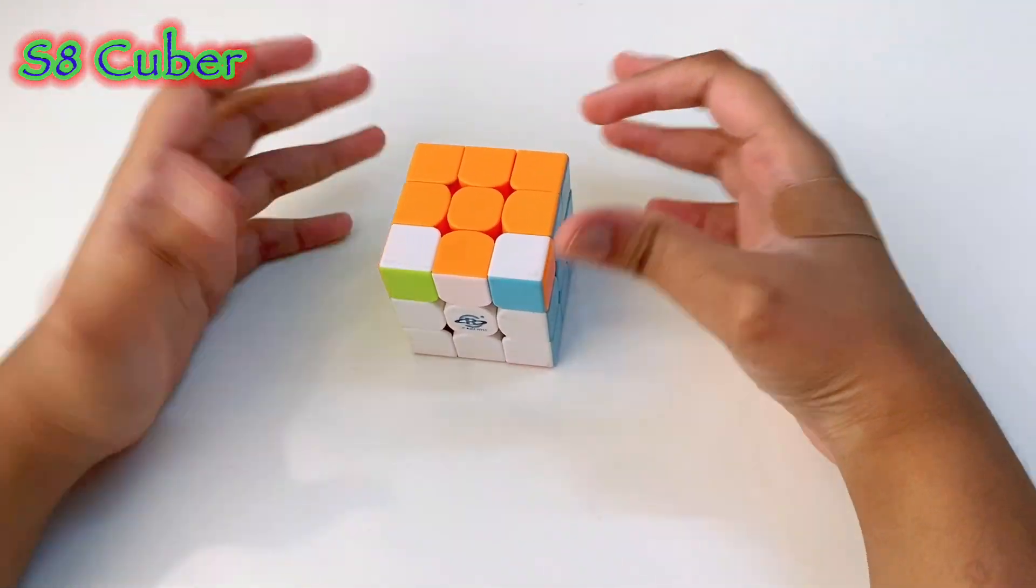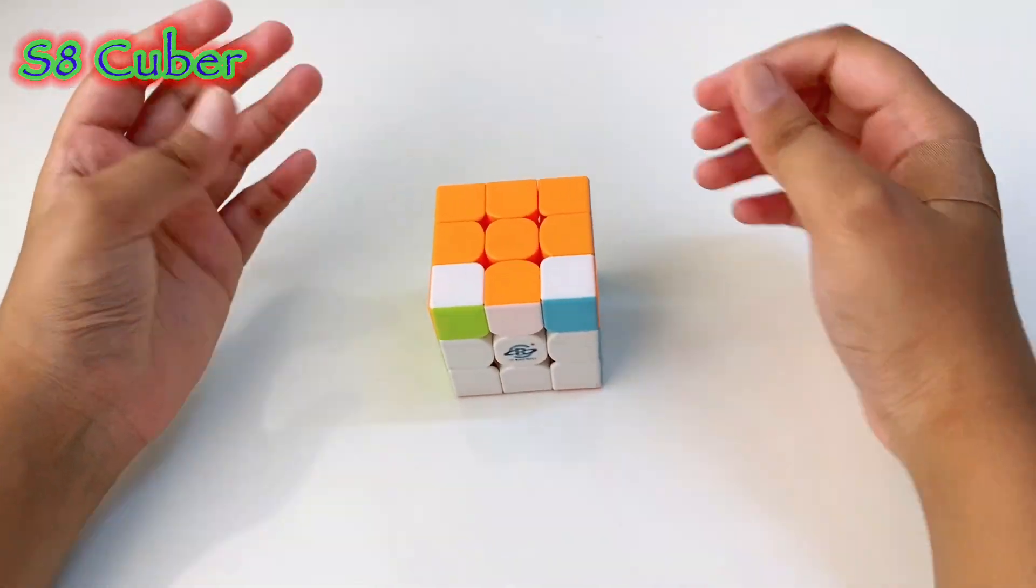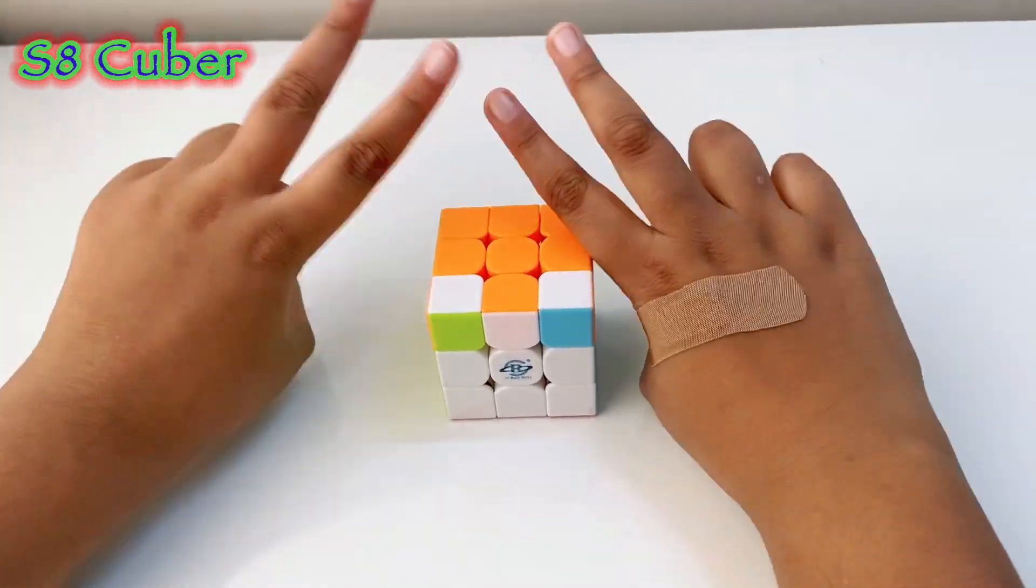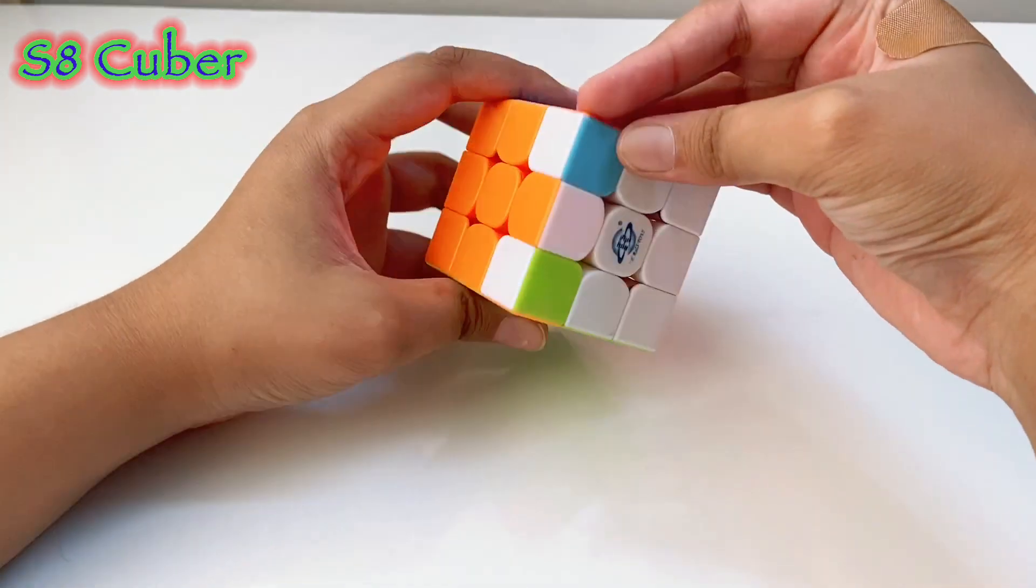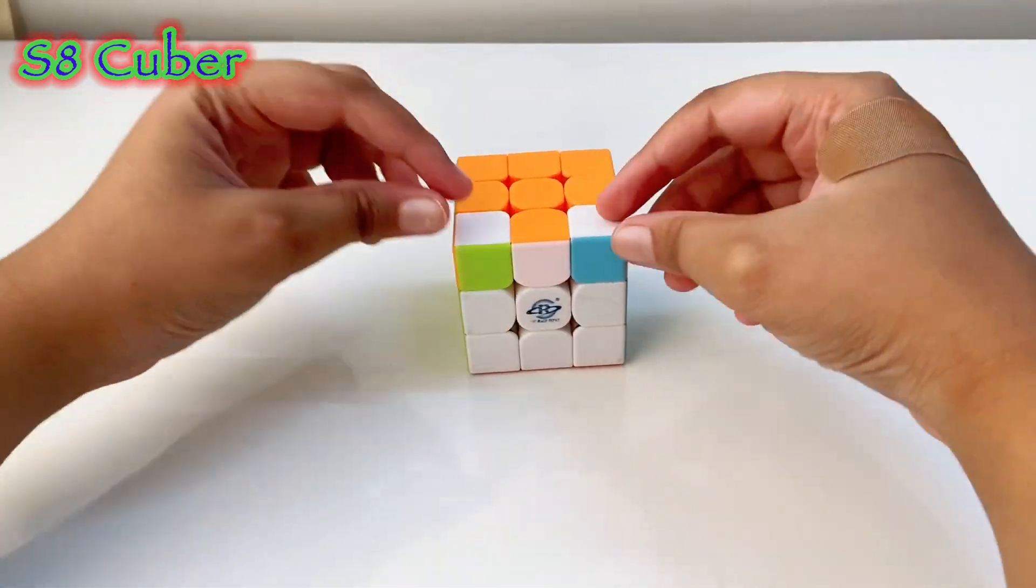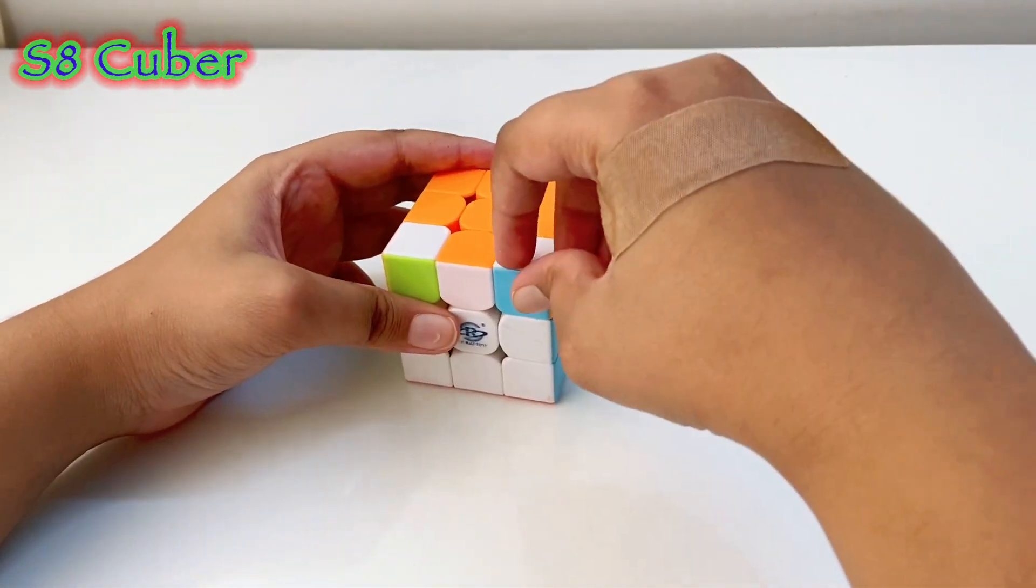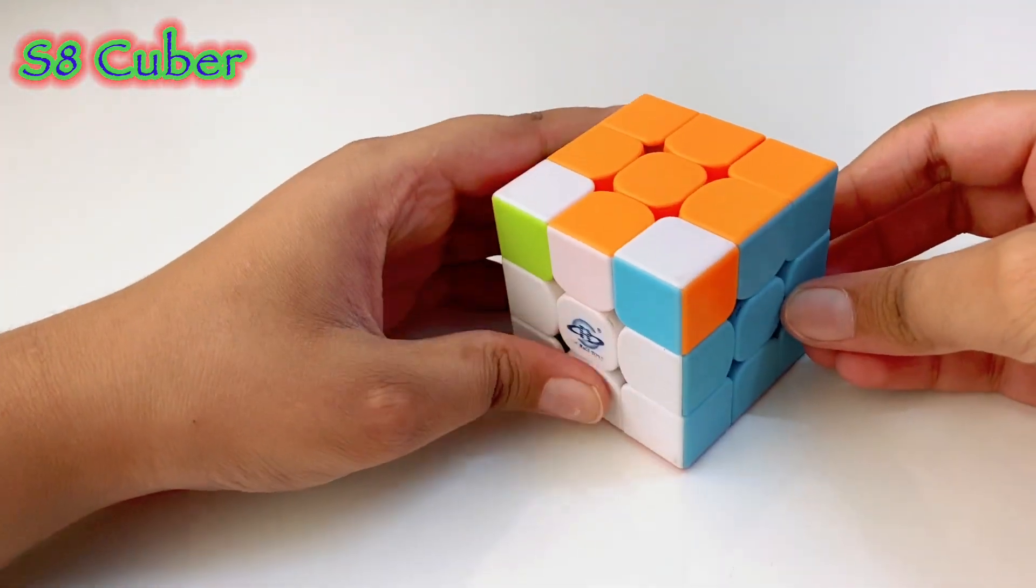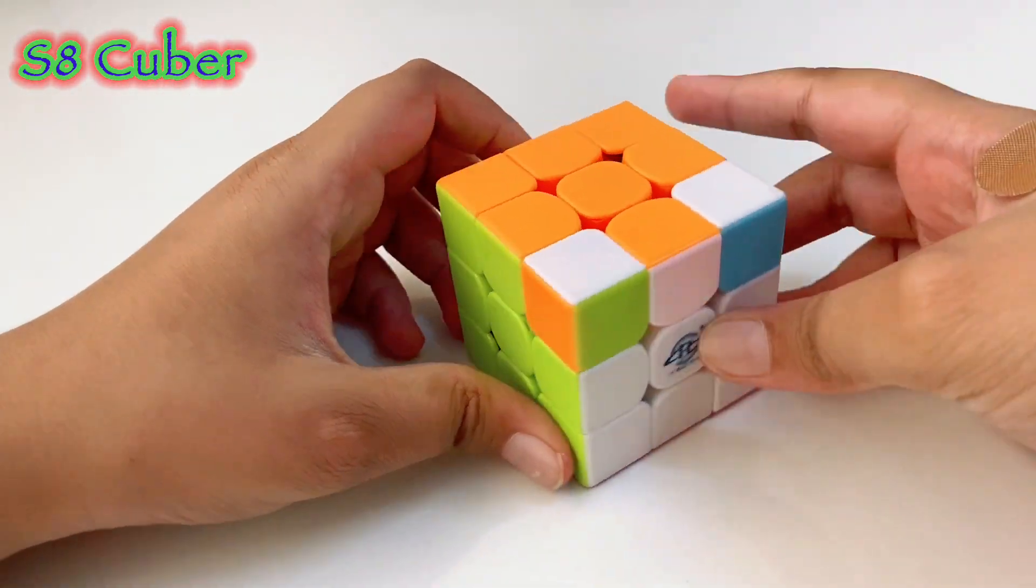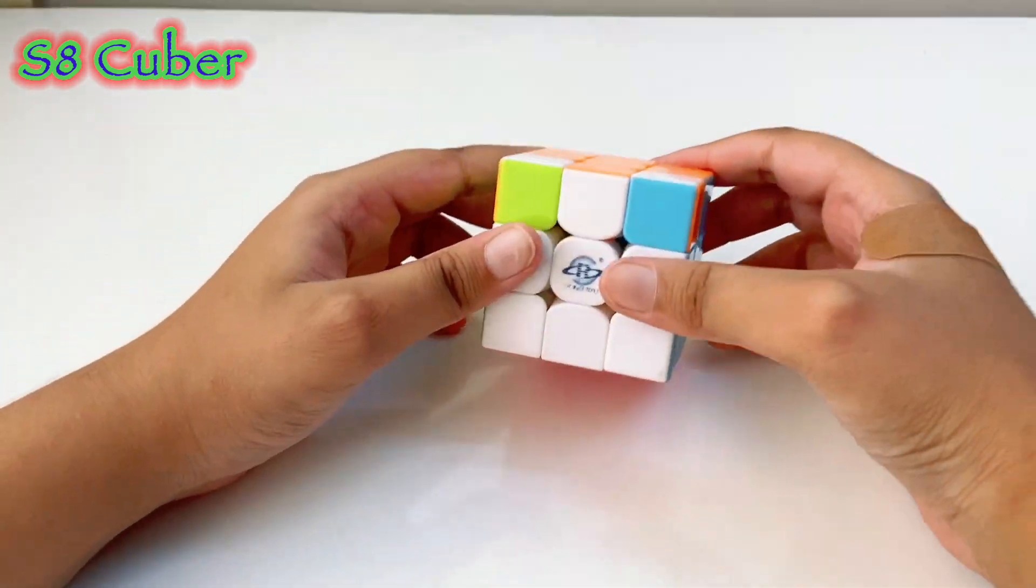Hey guys, welcome back to my channel. In today's video, this is my second parity video in the 3x3. As you guys can see, these are the two corners which I have to flip. They're in the correct place but they're not oriented properly. For this we're going to be using an easy algorithm, but first we have to keep them in the upper layer.